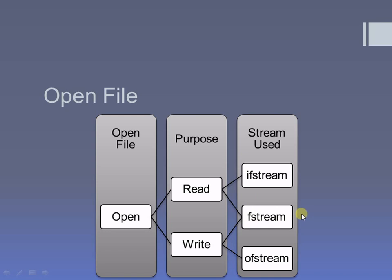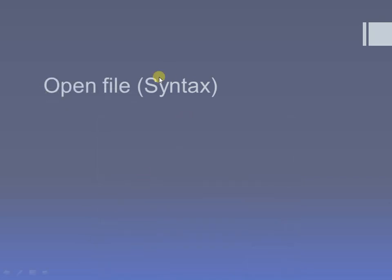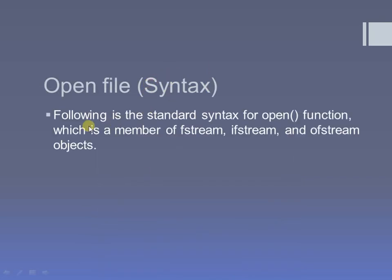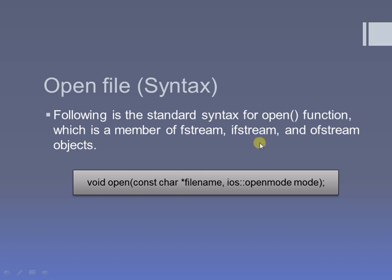By making an object — which is the file pointer — of the fstream class, you can access the member function open and open a file. The open function is a member function of fstream, ifstream, and ofstream. According to your purpose, that is for reading or for writing, you will finalize which stream to use. After finalizing this, you will call the open function with the appropriate parameters.